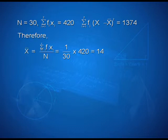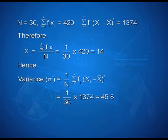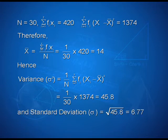Therefore, we can calculate x bar is equal to summation i varying from 1 to 7 of fi xi upon n, which is equal to 1 upon 30 into 420, that gives us 14. Hence, variance sigma square can be calculated as 1 upon n into summation i varying from 1 to 7 of fi into xi minus x bar the whole square. This gives us 1 upon 30 into 1374, that gives 45.8. And standard deviation sigma is equal to the positive square root of 45.8, that gives us 6.77.